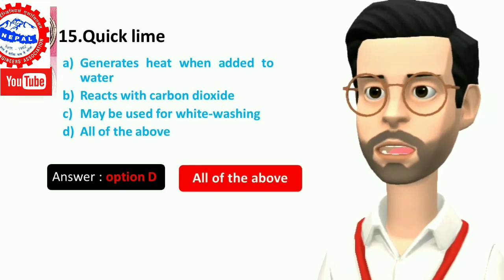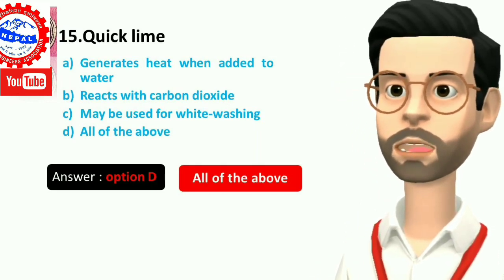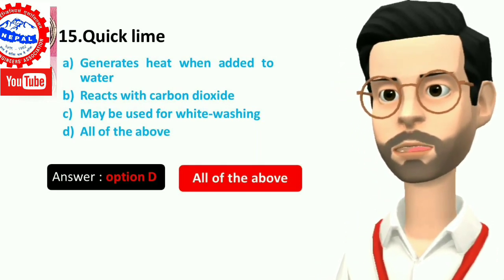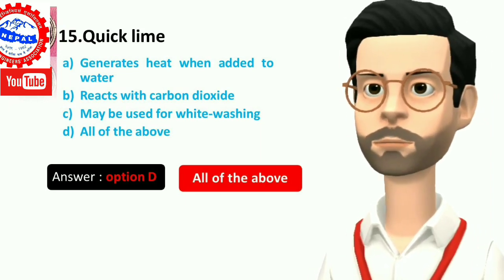Fifteen, quick lime: A) generates heat when added to water, B) reacts with carbon dioxide, C) may be used for whitewashing, D) all of the above. Answer is option D, all of the above.